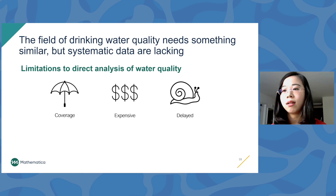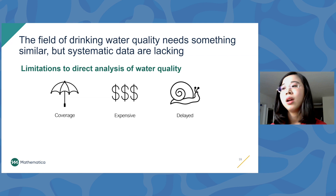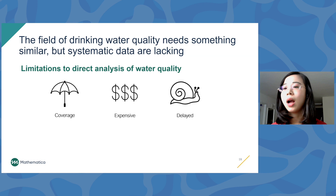So what is blocking the field of drinking water from making progress like air quality? Traditionally, drinking water quality data are generated through grab sampling — researchers have to go out, collect a drinking water sample, bring it back to the lab, and run chemical analysis. This process has several problems: low coverage, it is labor intensive and expensive, and results are often delayed.